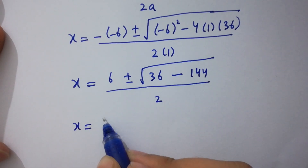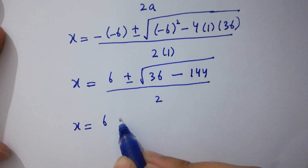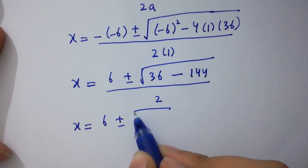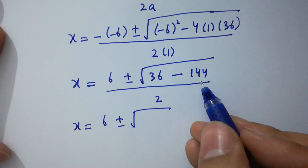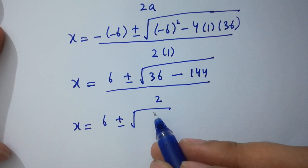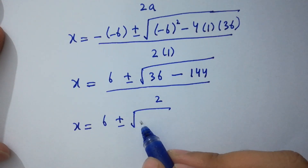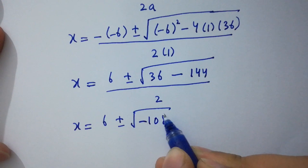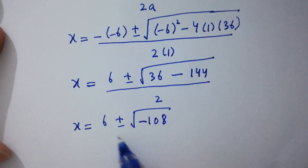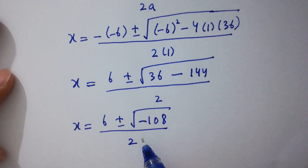This gives x equals 6 plus or minus square root of (36 minus 144), which is square root of minus 108, over 2.